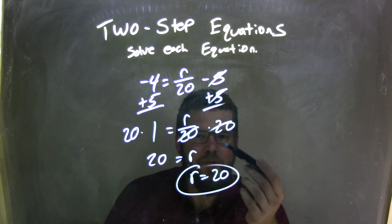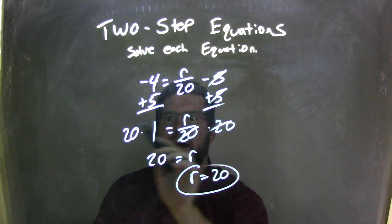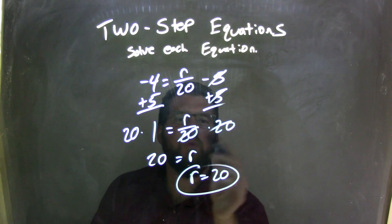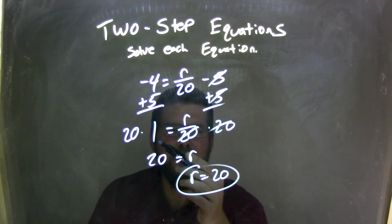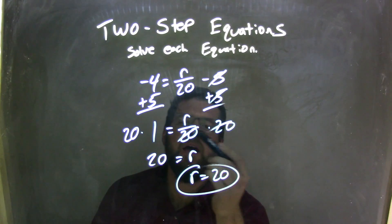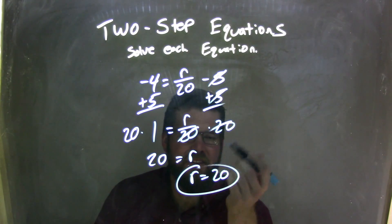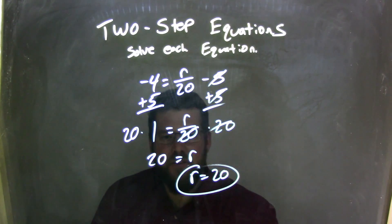That r over 20 is division. We're taking r and dividing it by 20. The opposite of division is multiplication, so I multiplied both sides by 20. The 20s cancel on the right, leaving us with just r, and 20 times 1 is easy, 20. Now I rearrange this to have it look nice with a final answer of r equals 20.